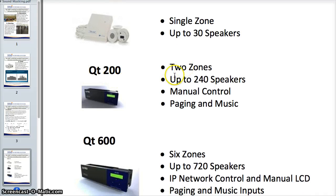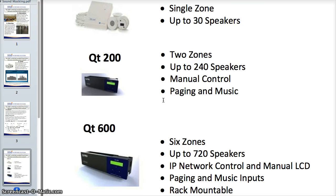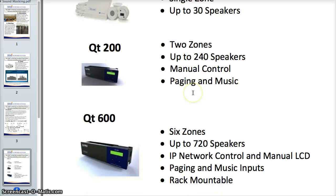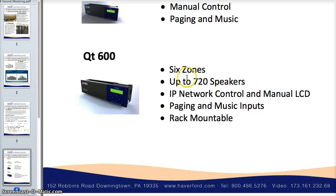Then there's the QT 200, which can do multiple zones — giving you two zones, so you can have a higher level of sound masking in your hallways than in your private offices. That covers up to 3,000 square feet with the QT 30 and 24,000 square feet with the QT 200, since a 10 by 10 space is 100 square feet. Finally, the QT 600 can handle up to 6 zones, 72,000 square feet, and supports IP control, meaning you can control the module from any computer on the network with a password.